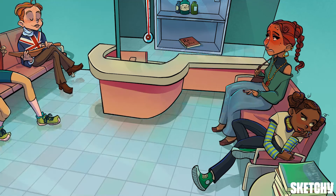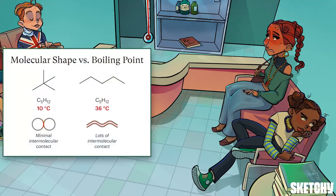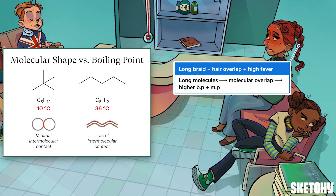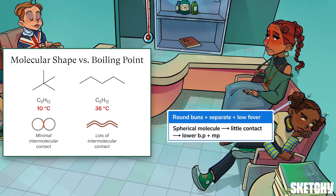Let's talk about the effect of molecular shape on boiling and melting points. If you keep functional groups and molecular weights the same, long snake-like molecules have higher boiling and melting points than rounder molecules. The overlapping strands of this long braid remind you that when long skinny molecules overlap, there's a lot of surface area in which London dispersion forces can occur, raising the melting and boiling point — hence the professor's fever. And this non-feverish patient's round buns remind you that round molecules have minimal contact with each other, minimizing dispersion forces and leading to lower melting and boiling points.